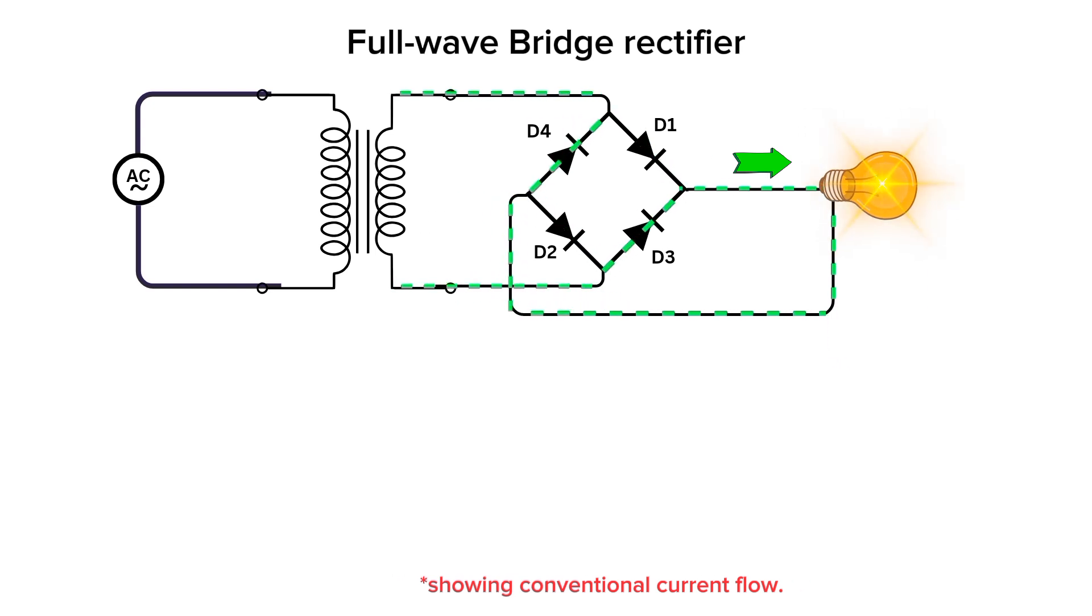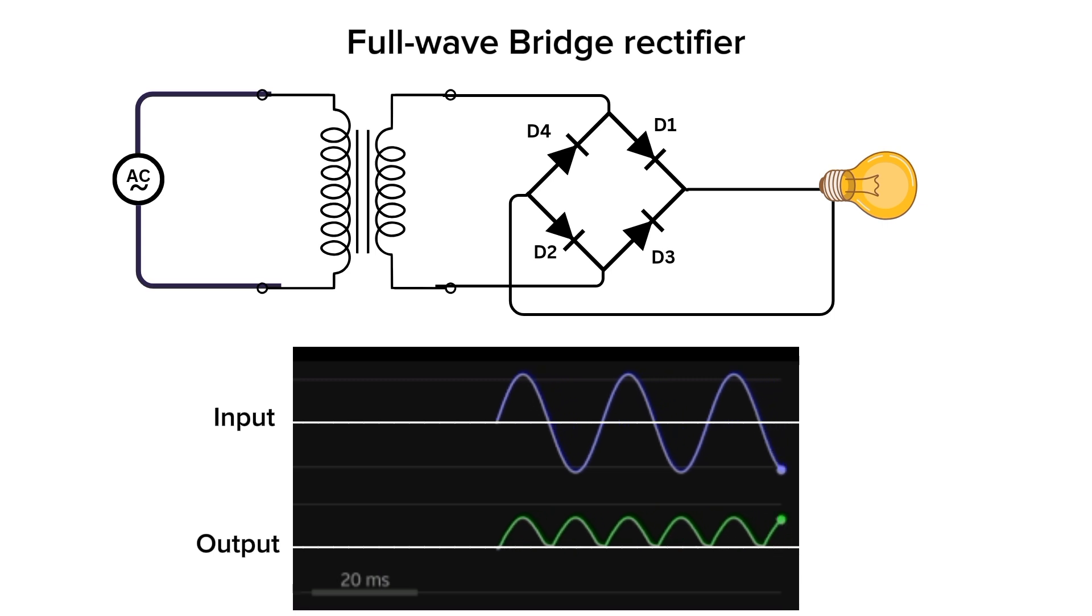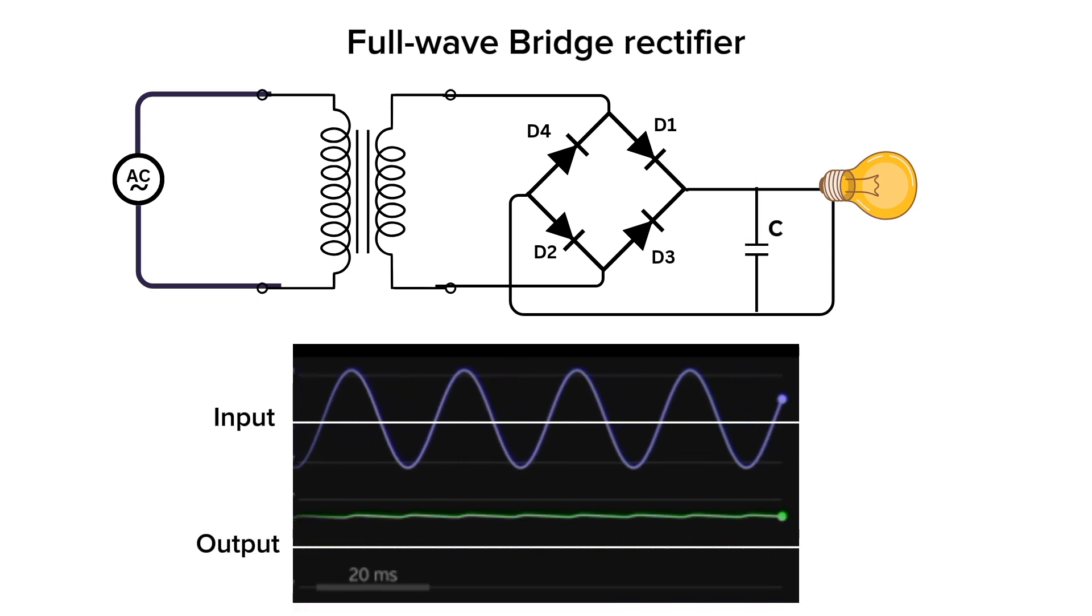As a result of this process, the output voltage across the load is always positive with respect to the ground, effectively converting the AC input into a pulsating DC output. To smooth out the pulsating DC voltage, a capacitor is often connected across the load, which helps to reduce the ripple voltage, resulting in a more stable DC output.